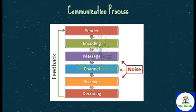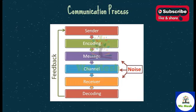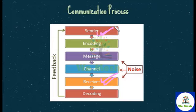The next topic is the communication process. The communication process begins with the sender, who is trying to pass on a message to the receiver. Sender is a person who initiates the communication process, and may also be known as the source or communicator. The sender has some information which they want to communicate to another person to achieve some purpose. By initiating the message, the sender attempts to achieve understanding and change in the behavior of the receiver.